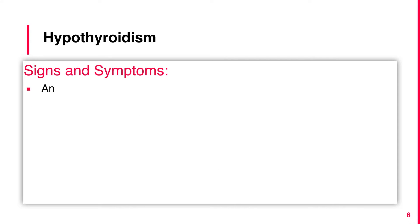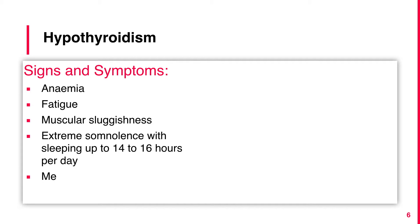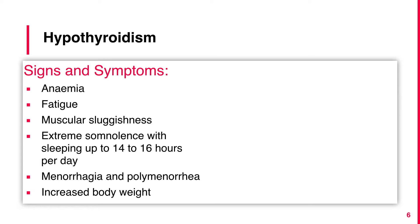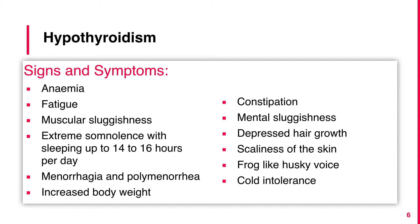Other general features of hypothyroidism in adults include anemia, fatigue, muscular sluggishness, extreme somnolence with sleeping up to 14 to 16 hours per day, menorrhagia and polymenorrhea, increased body weight, constipation, mental sluggishness, depressed hair growth, scaliness of the skin, frog-like husky voice, and cold intolerance.